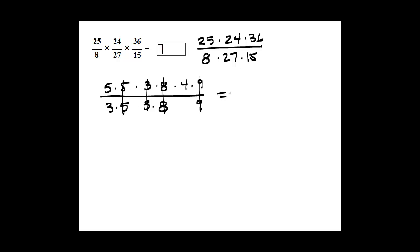We can multiply what's remaining in the numerator, 5 times 4, which is 20, over what's remaining in the denominator, 3. 20 over 3.